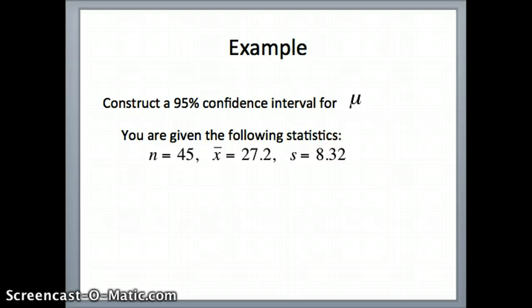So let's look at an example. And our goal here is going to be to find the 95% confidence interval for mu. We have a sample. Let's say we have 45 individuals, and the average is 27.2, and the standard deviation is 8.32. But let's give it some context. Let's assume that these numbers represent the average number of patients that nurses in a certain type of ward may see over the course of a week.